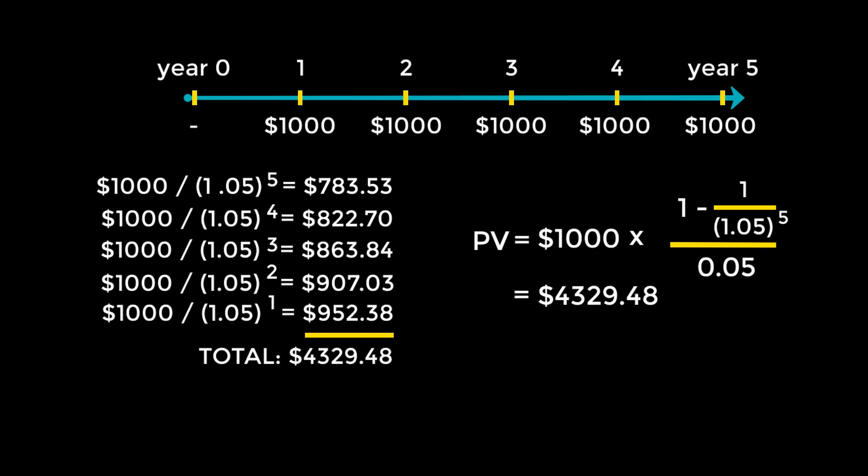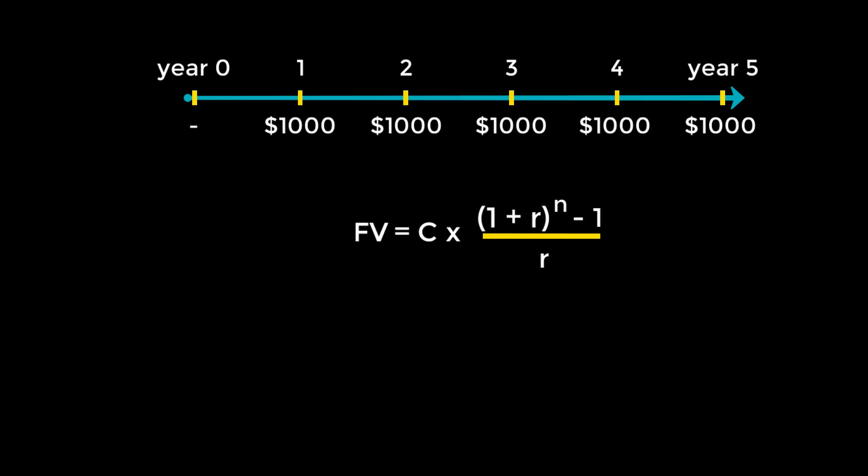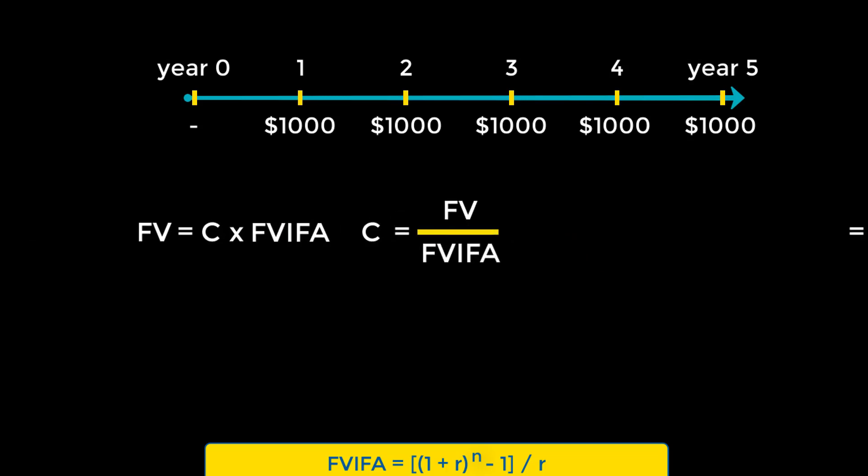Similarly, when we need to calculate the future value of an annuity, instead of compounding each cash flow individually and summing them up, we can use this formula. The second part of this equation is called the future value interest factor of annuities, FVIFA. Like for PV, we can also rearrange to find C. We can even solve for N, but we still need trial and error math or a financial calculator to find R.